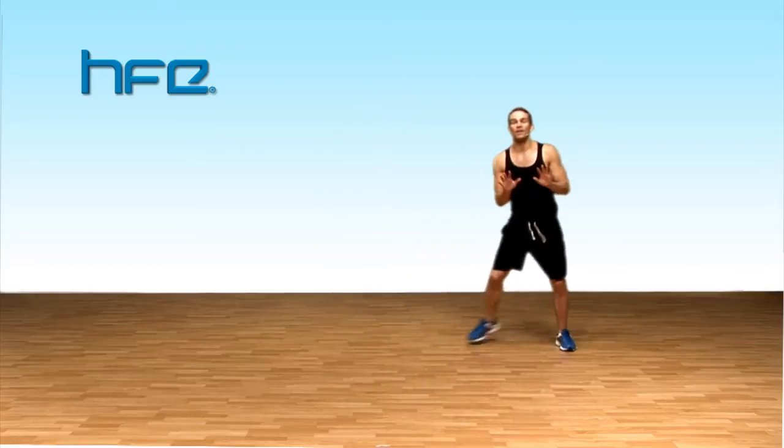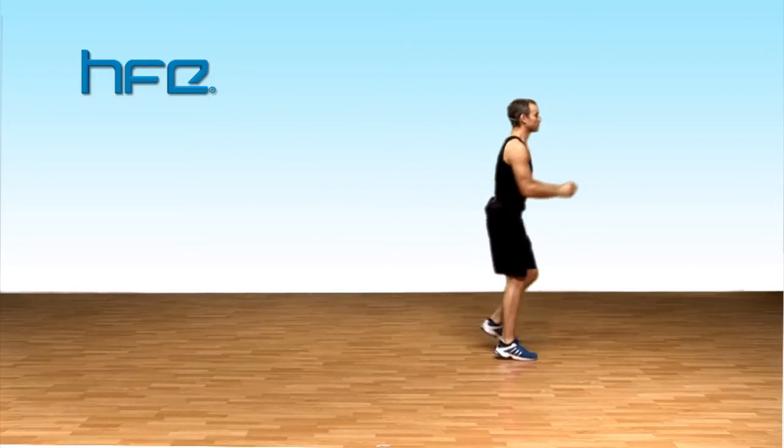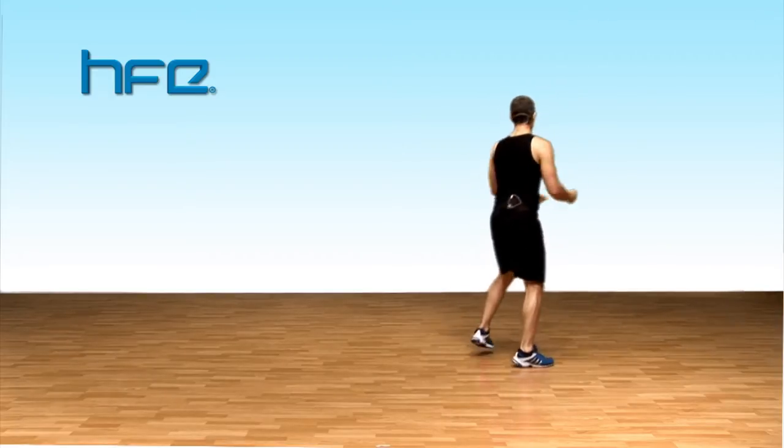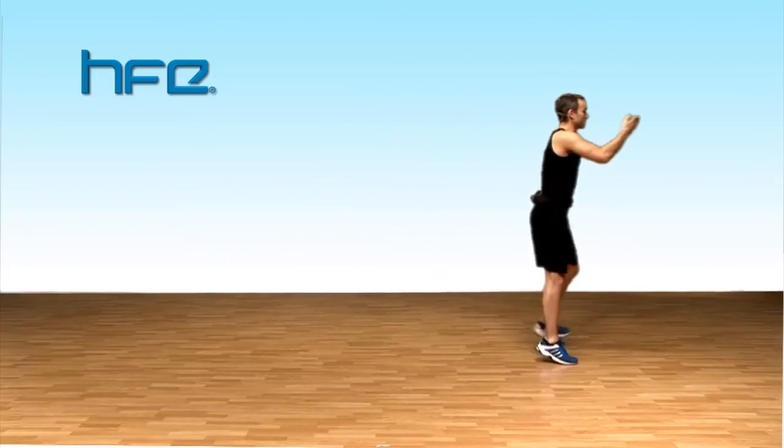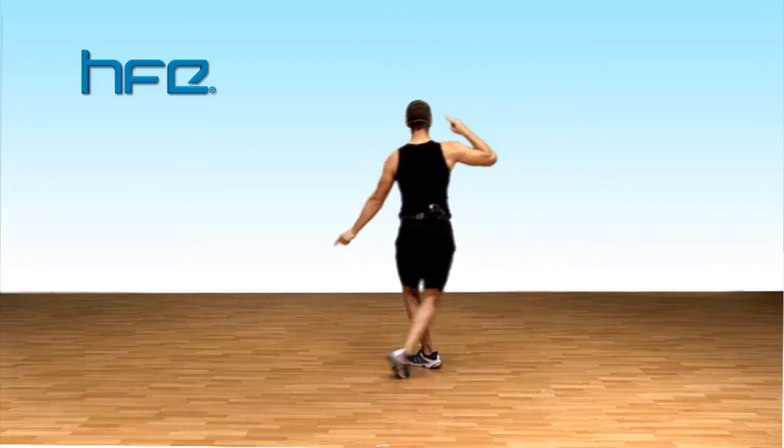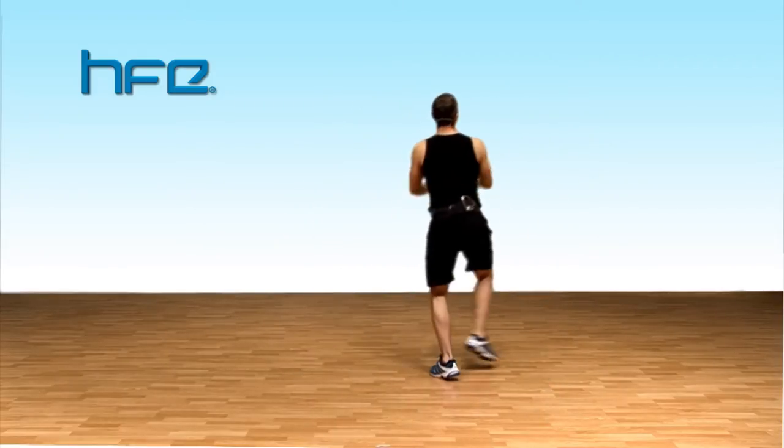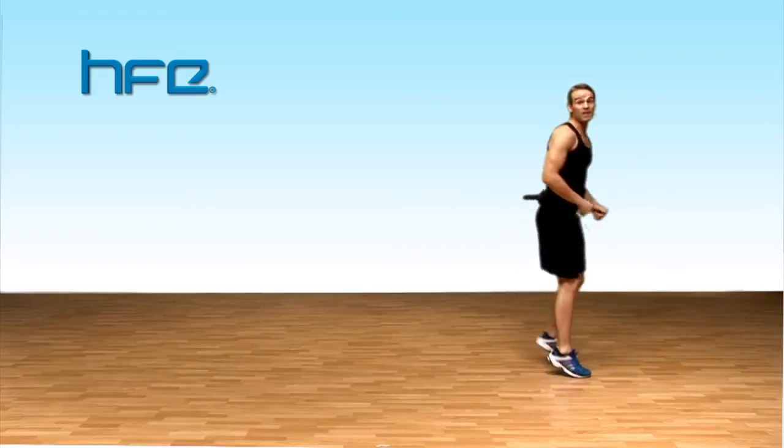Stay doing the grapevine to me or double-step touch. Your option is L grapevine. That's it. Step behind, step together. Just a quarter turn with me. Quarter turn. One more time. You've got it. Remember this can be a double-step touch if you want.